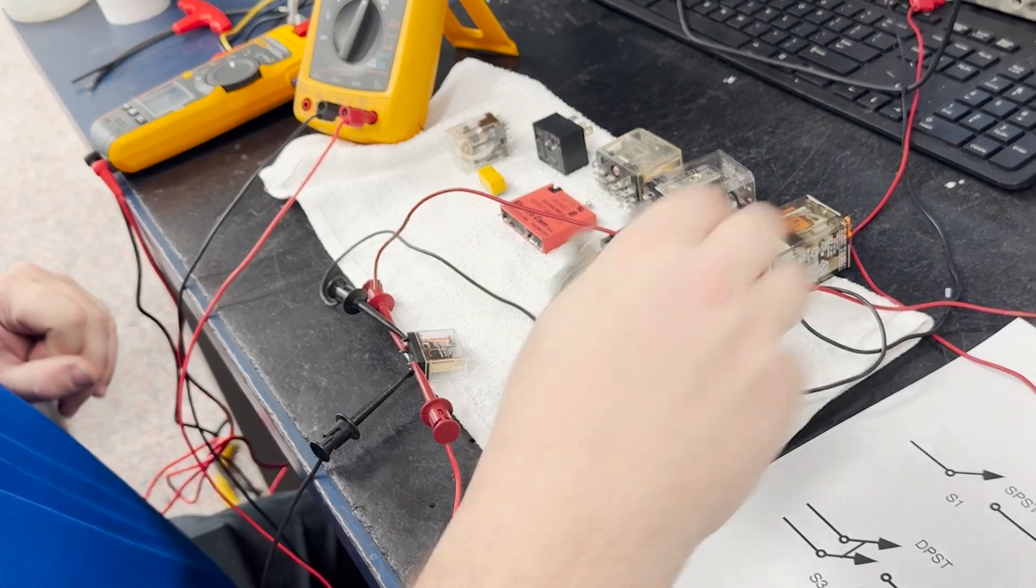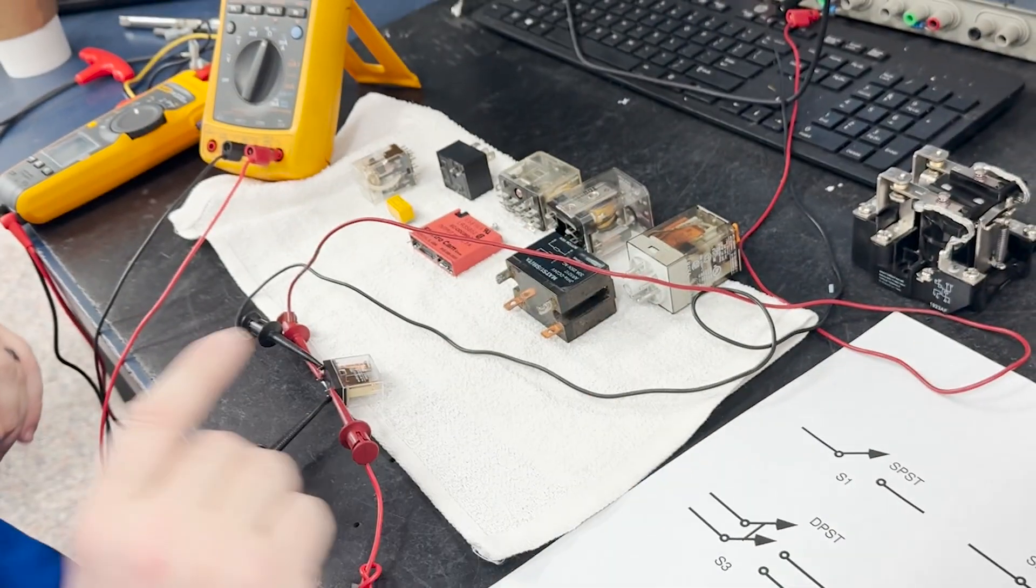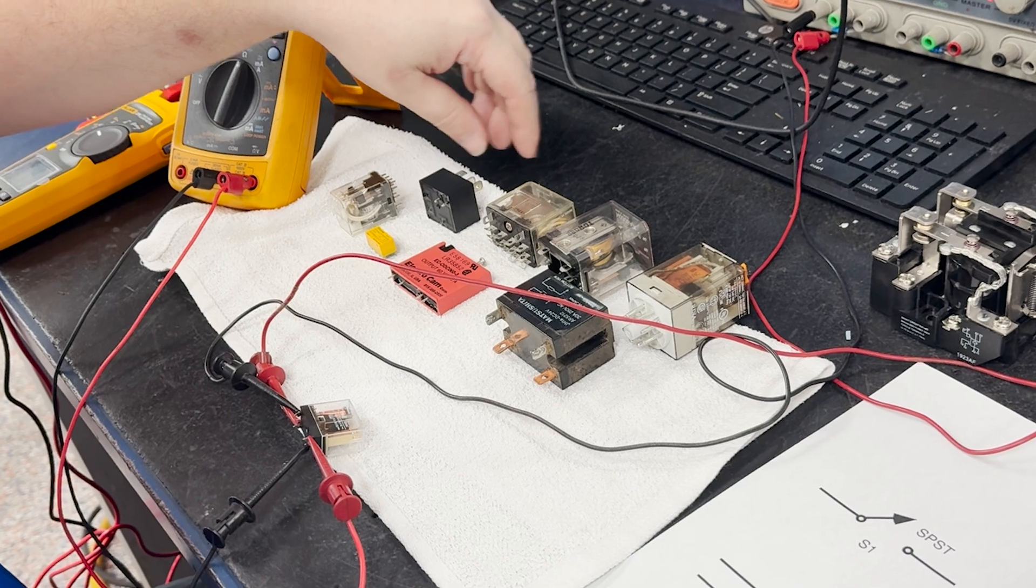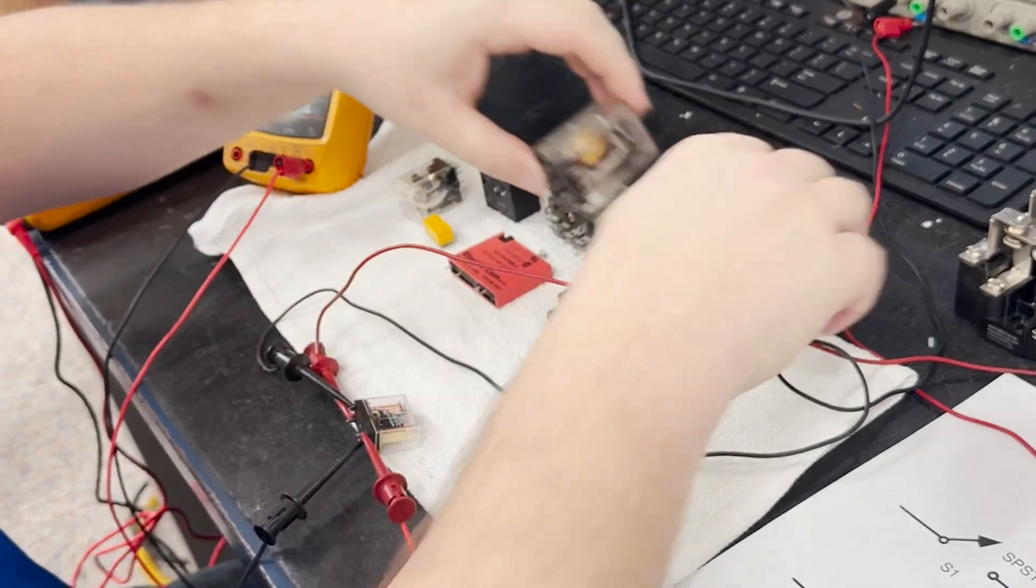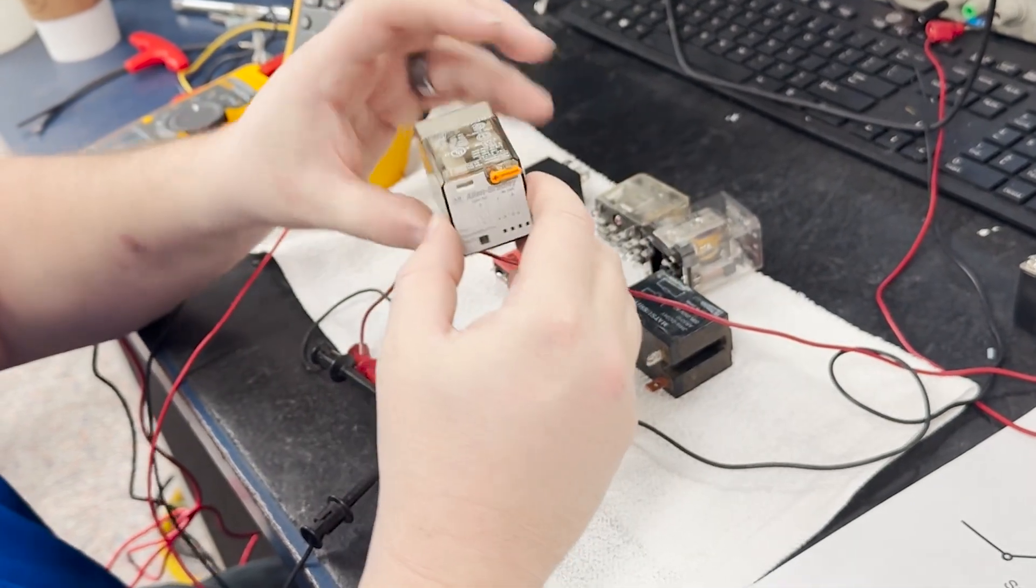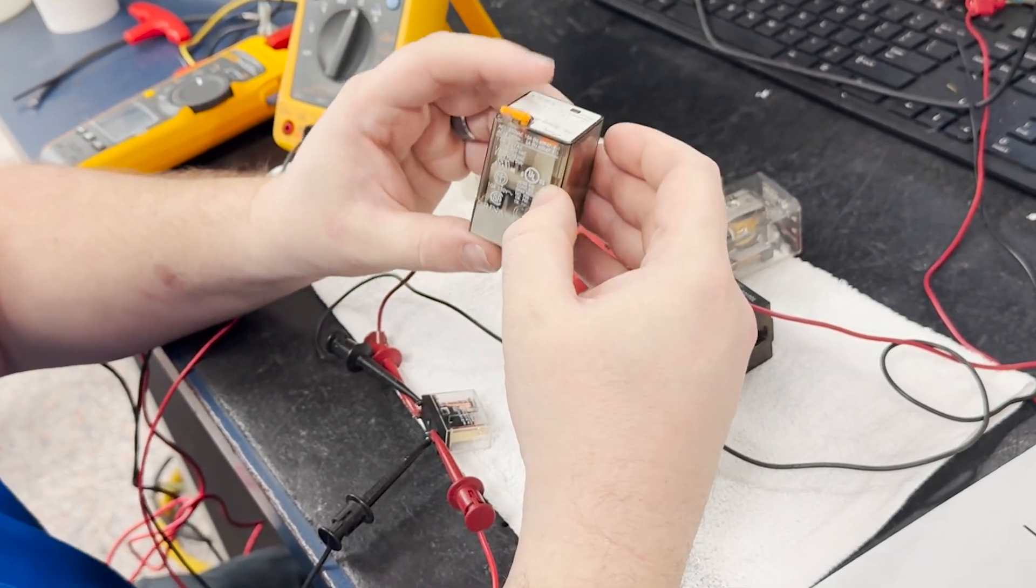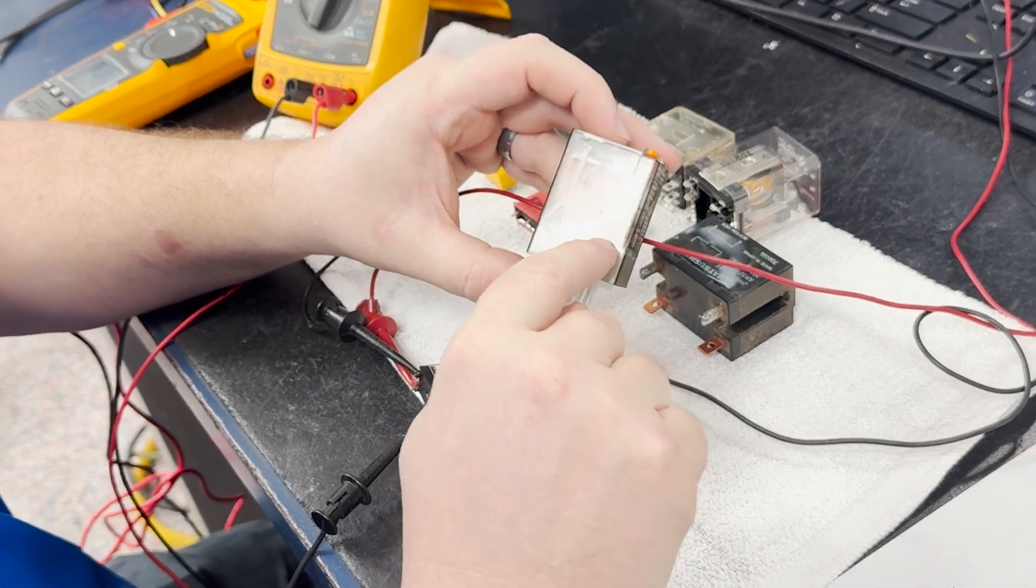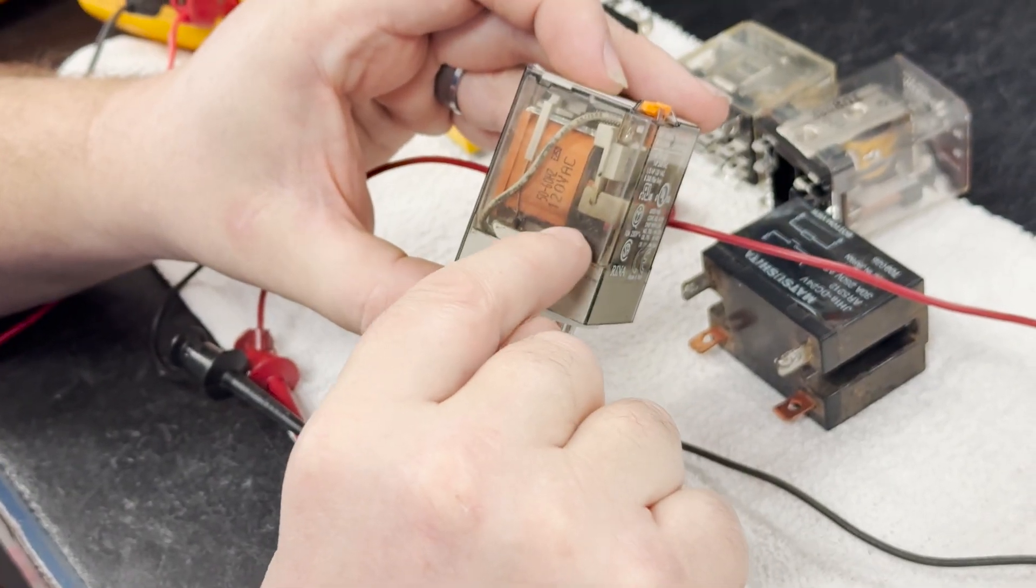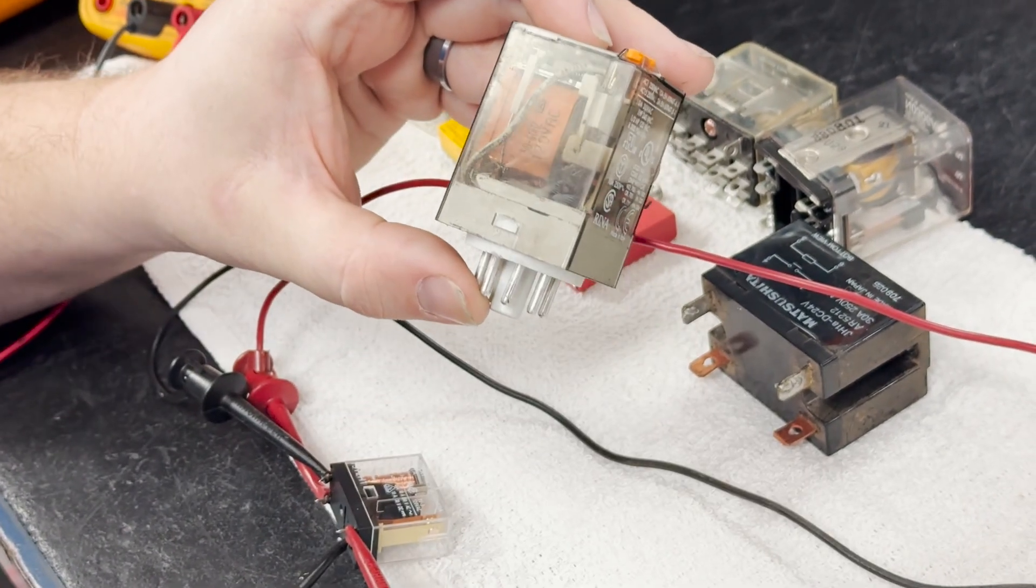So now we will go over one of the most common failures we see when it comes to relays, which is carbon buildup on the contacts. So here we have a relay that we found to be failed, and we can see that the reason for the failure is this high buildup of carbon on the actual contacts. So I will demonstrate this relay and show you what we mean.